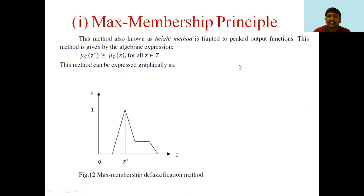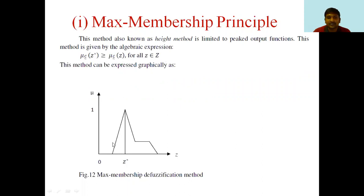First we can see the maximum membership principle. This method is also known as the height method and is limited to peaked output functions. This method is given by the algebraic expression: mu_c(z*) ≥ mu_c(z) for all z belonging to Z. On the x-axis consider z values and on the y-axis consider membership values between 0 to 1. The membership function values can be converted to crisp quantity to identify the z* value.